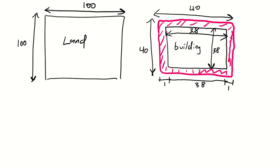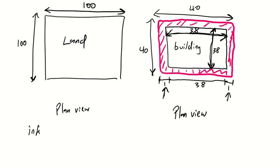The shaded pink part is your wall. The internal of the building excluding the wall is 38 by 38, and we have a 1 meter wall width on either end. Remember this is a plan view of the building and the land. We've got four stories that people can occupy, plus one story of car park, and we are asked to calculate the floor area ratio, the ground space index, and the open space ratio.